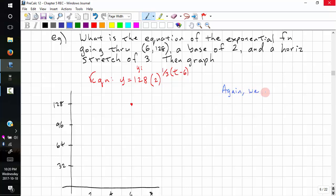Again, we can calculate the y-intercept. So y equals 128, 2. And we'll split this up. t over 3 and 2, negative 6 over 3. We simplify this. 128, 2 to the power of t over 3. This is 2 to the power of negative 2.